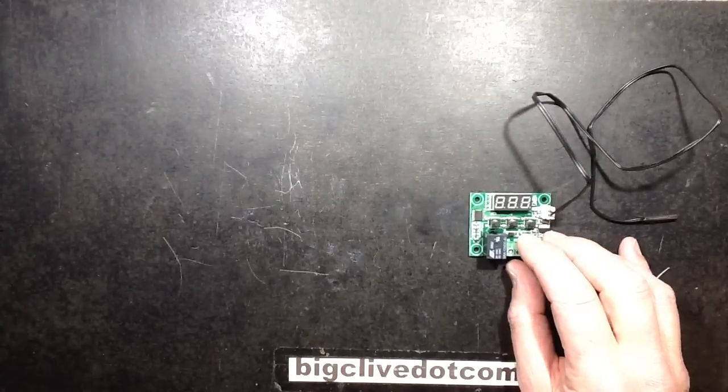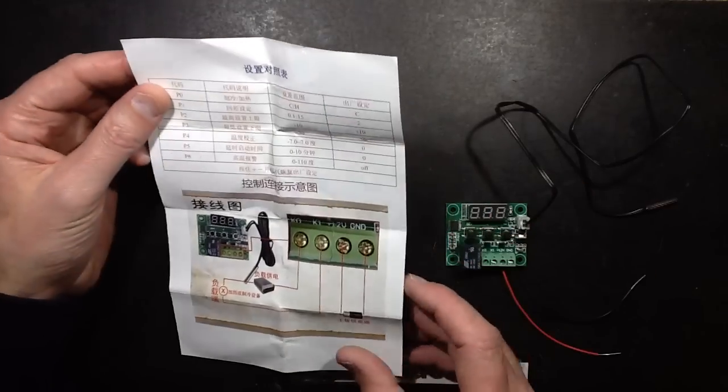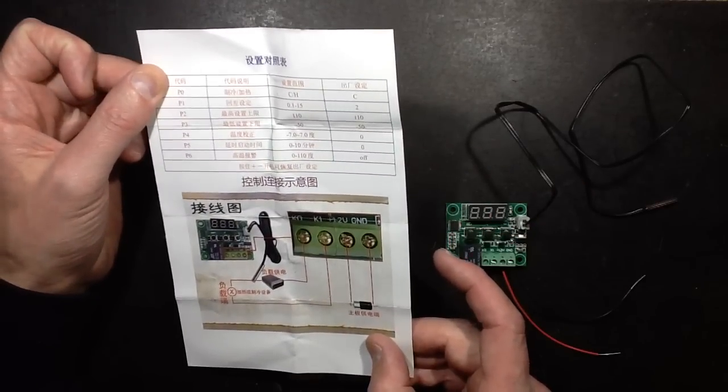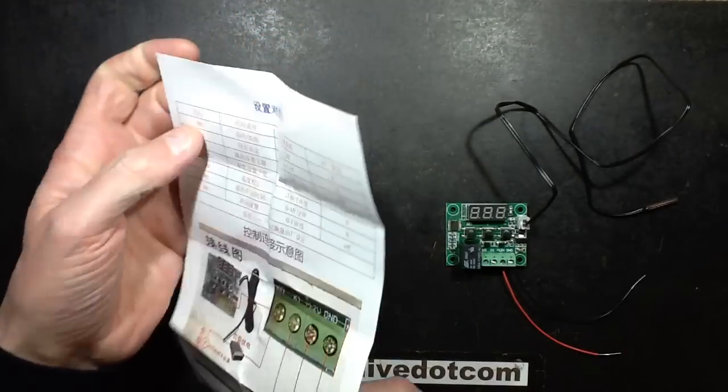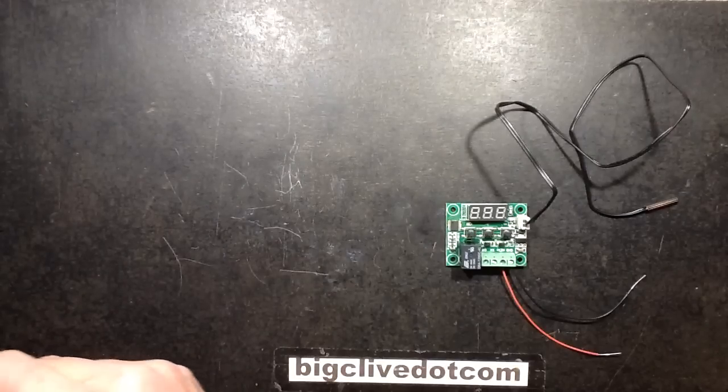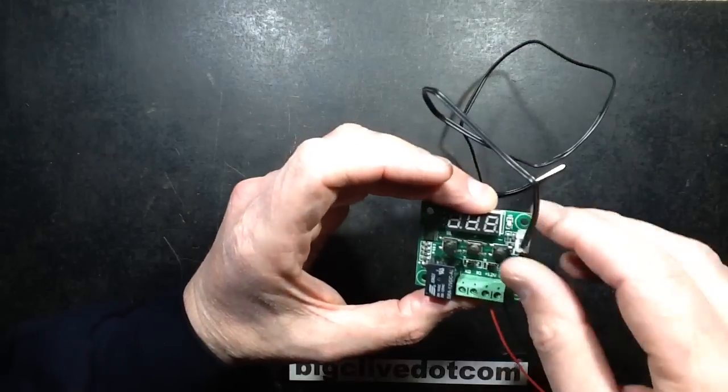So it came with this little instruction guide which is rather predictable in Chinese because it's really intended for the Chinese market. However, a bit of sleuthing on the internet found information about setting all the different parameters in it. So let's take a look at it electronically.